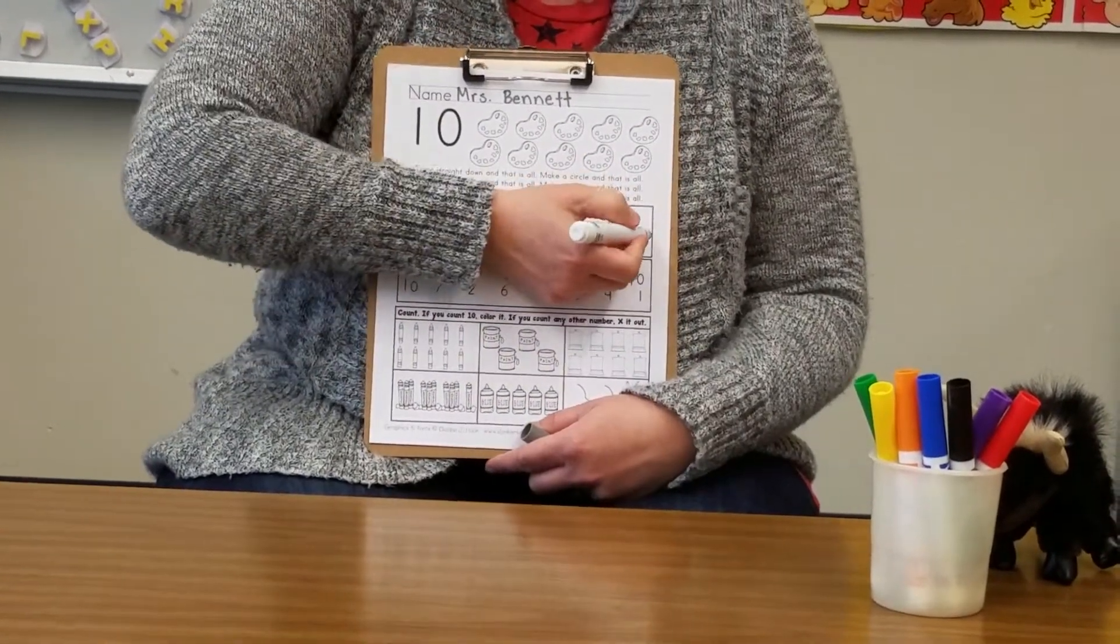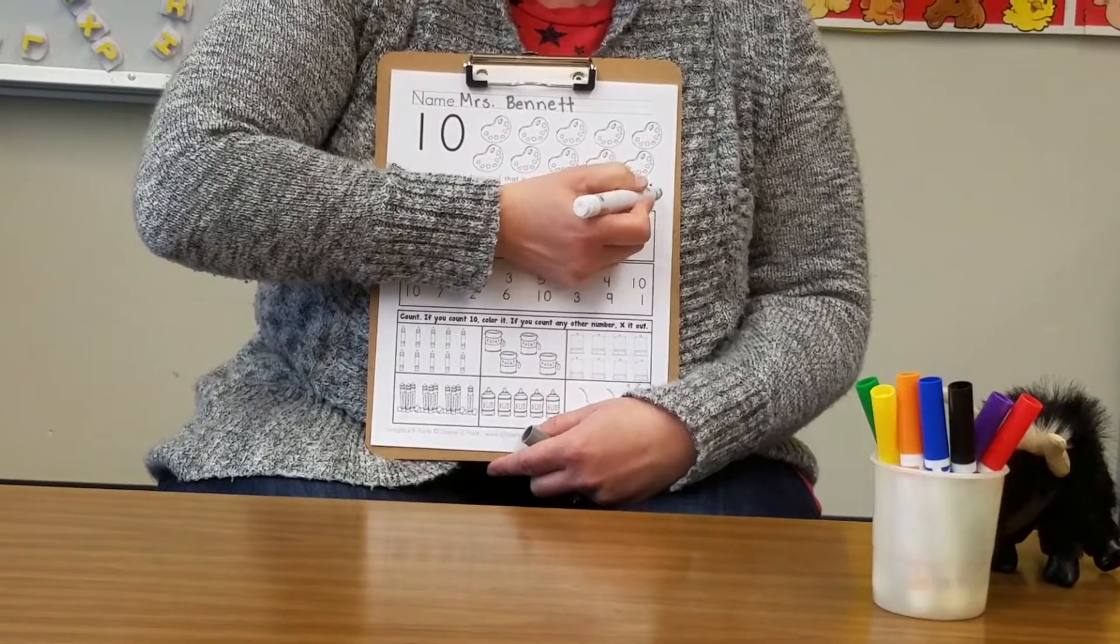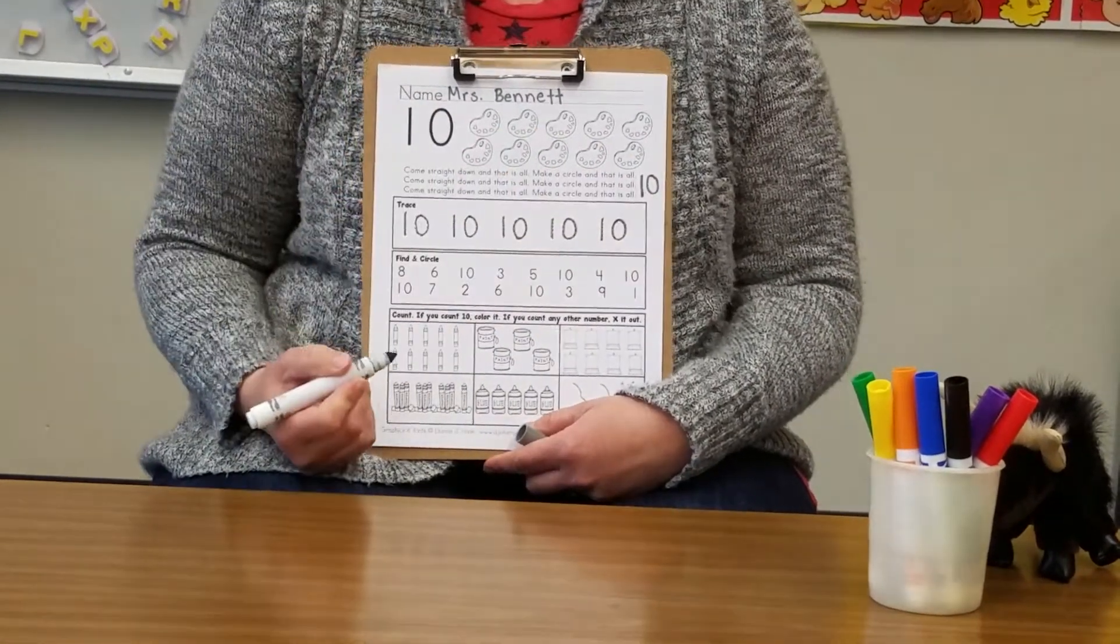Once you've traced all the number 10s you can try to write a number 10 on the side here all by yourself and see if you can do that.